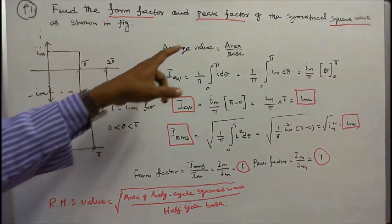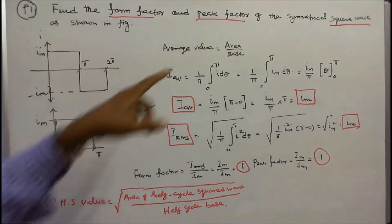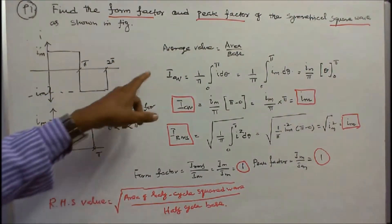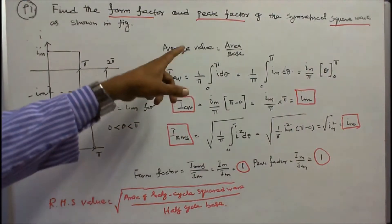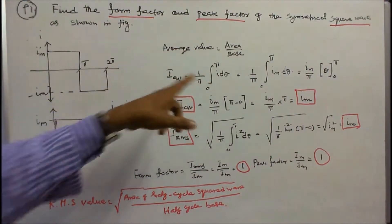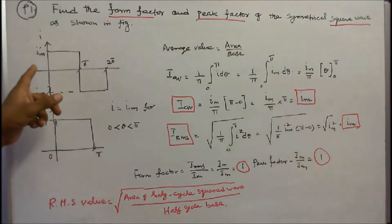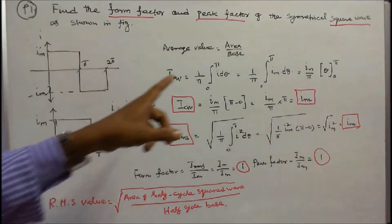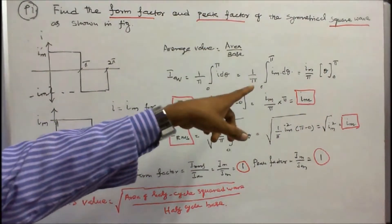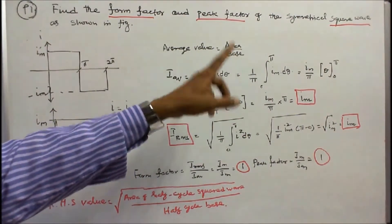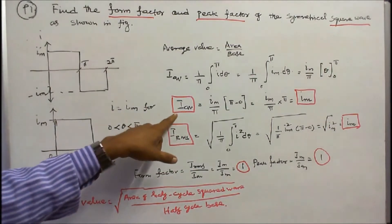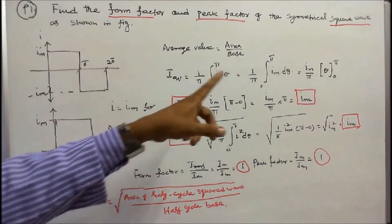The average value is equal to area divided by base, and the base is pi. Therefore, I_average = (1/pi) × integral from 0 to pi of I dθ. Since I = I_m, integrating and substituting the limits gives I_average = I_m.